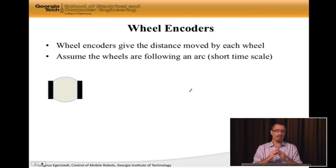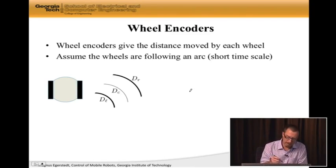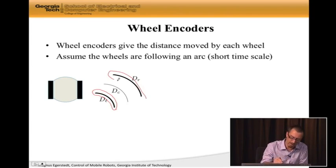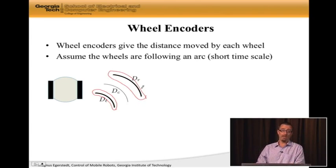So a wheel encoder gives the distance moved by each wheel. So we have left and right wheels here. And here's the following assumption we're going to make. We're going to assume that each wheel is following an arc, which means that it's turning at a constant rate and driving at a constant velocity. So v and omega are constant. What this means is, on short time scales, that's correct. And if we do that, well, let's say that d sub l is the distance the left wheel has turned. And d sub r is the distance the right wheel has turned. So in this case, the right wheel is turning quicker than the left wheel, because it's turned more.